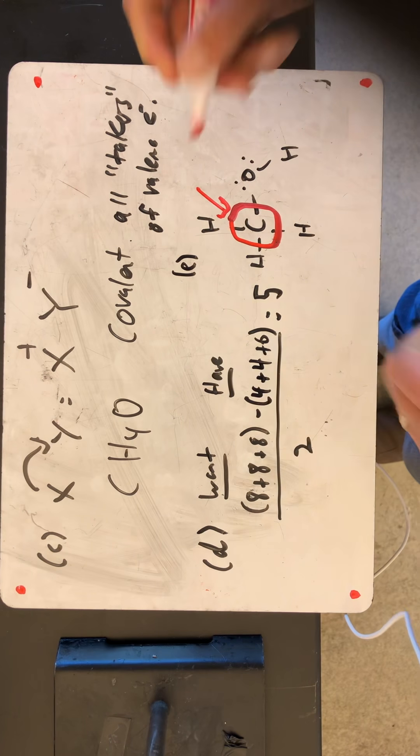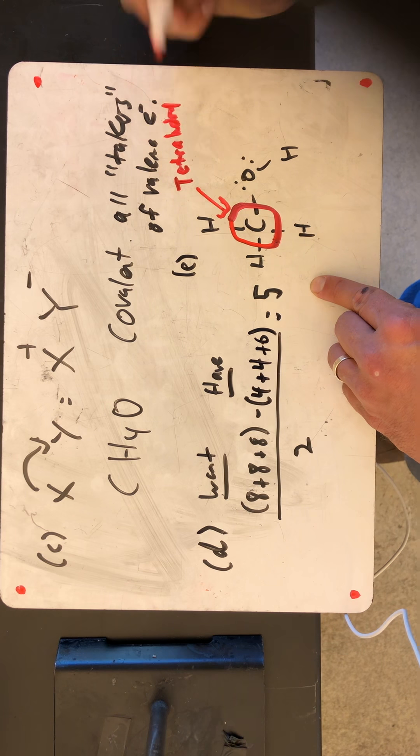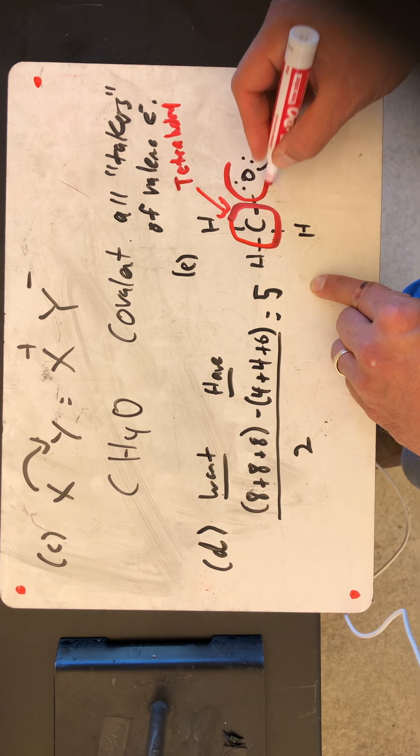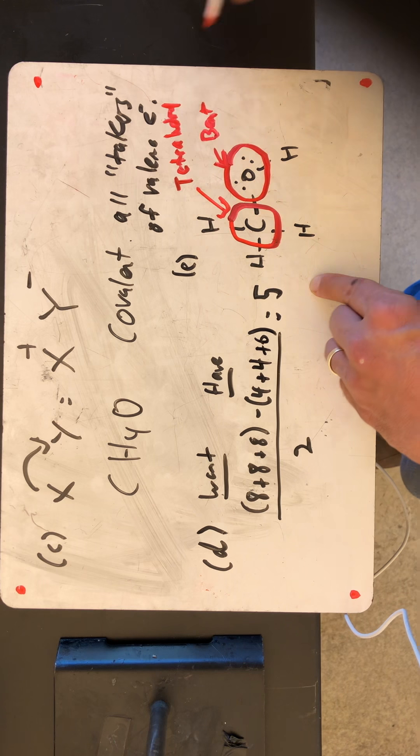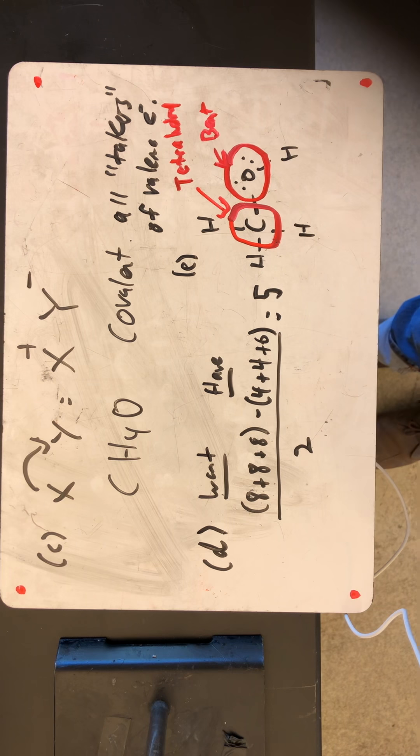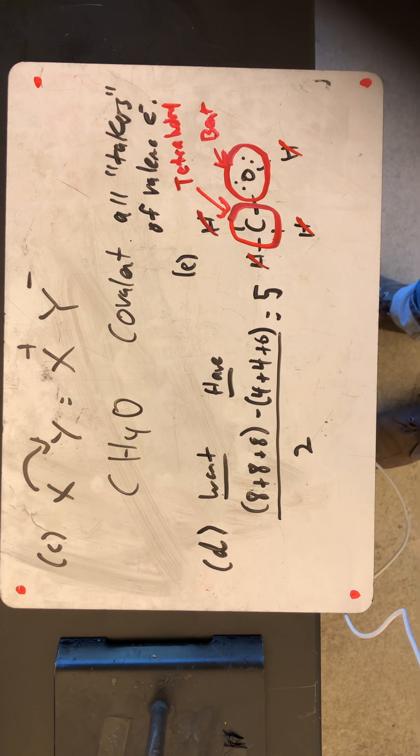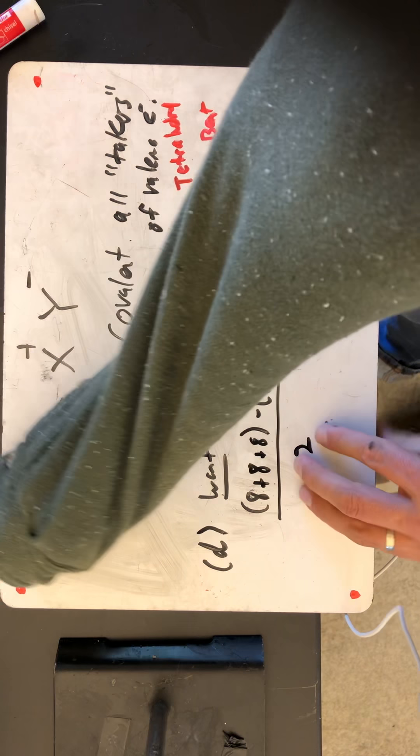So in this case, we know that this is a tetrahedral center because the carbon is surrounded by 4 bonds. And if we look at this one specifically, we know that that is bent. And it's bent because oxygen is surrounded by only 2 bonds and 1 lone pair. So we're not going to look at the geometry of hydrogens on the outside because the definition of a central atom that has geometry is one that's in the middle of at least 2 atoms.